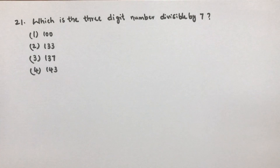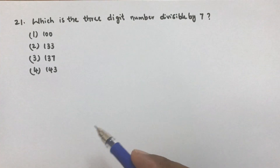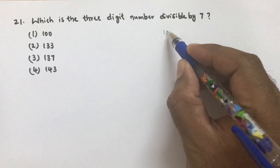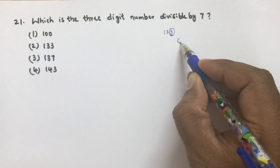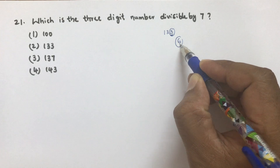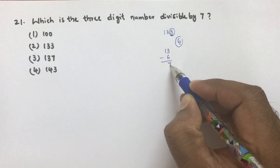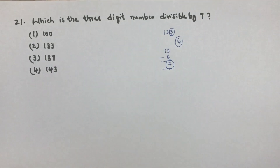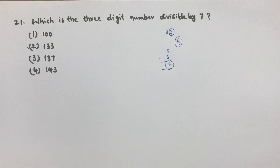Which is the three-digit number divisible by 7? You can solve it by directly dividing, or use the divisibility rule for 7. Take the option 133: take the last digit 3, double it to get 6, then subtract from the preceding number: 13 minus 6 equals 7. Since the result is divisible by 7, the number is divisible by 7. So the correct option is 133.